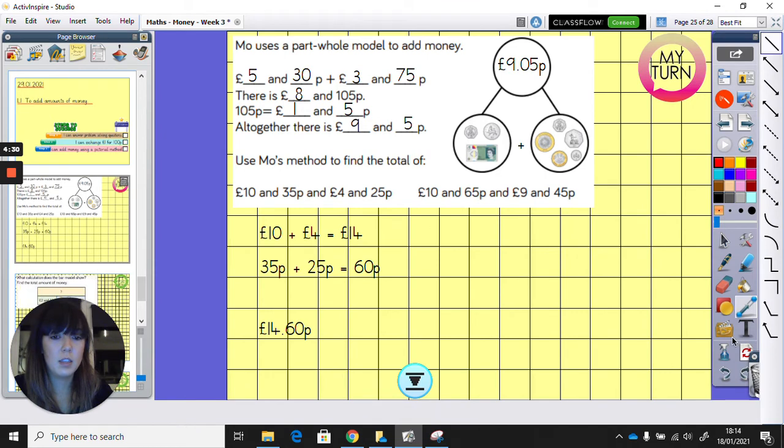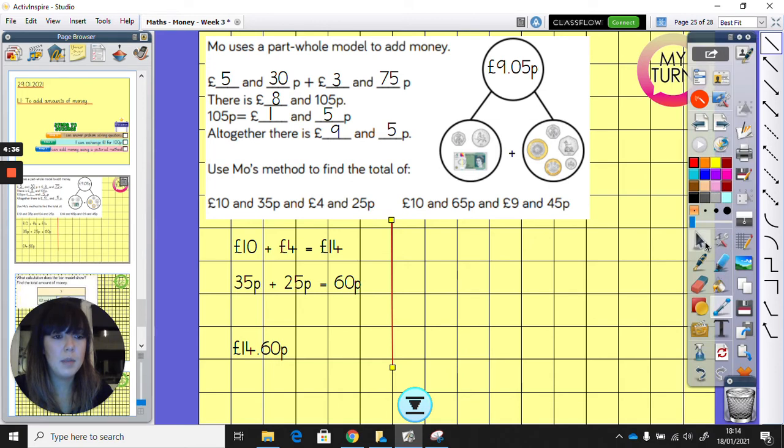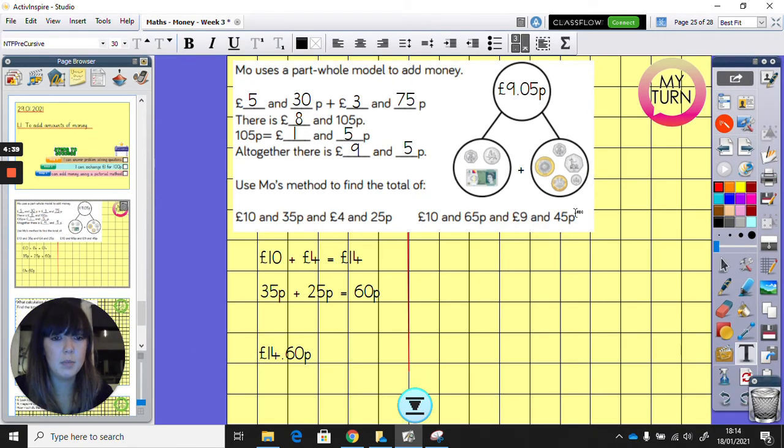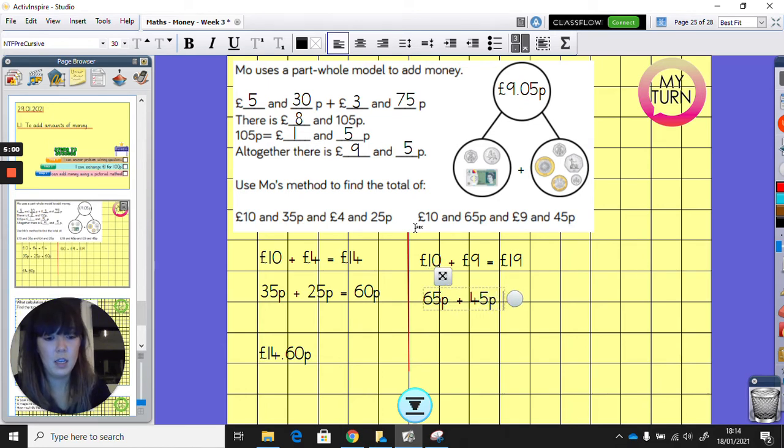So our next one is going to be a little bit harder. So we've got £10 and 65p and £9 and 45p. So we need to add the pounds up first. So we're going to do £10, add £9, equals £19. And then we've got 65p, add 45p. And we've got to work out what that is. So I know that 6, add 4, equals 10, so I know that 60, add 40, equals 100. So 100, add 5, add 5, is 110p. So this is a little bit trickier, isn't it? Because we don't need 110p, we can exchange that for £1.